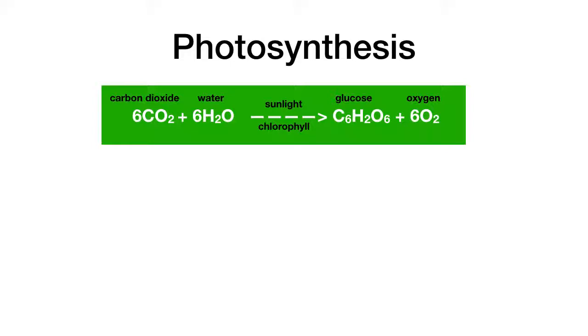When all these ingredients are present, photosynthesis will create glucose and also oxygen. The glucose will be used by the plant as food, and the oxygen, a by-product, will be released from the plant.